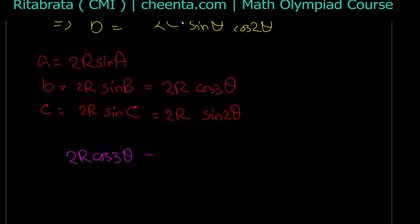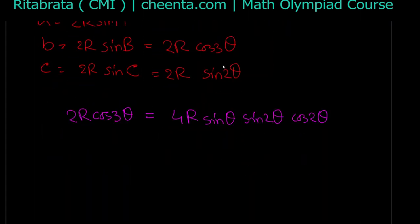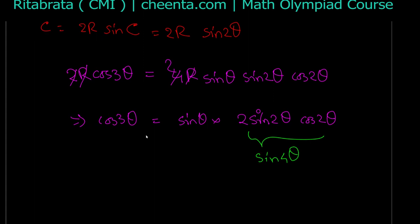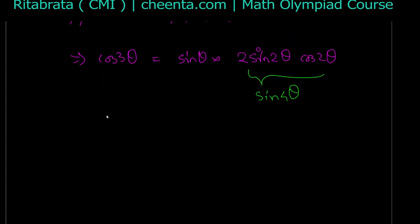Substituting gives 2R cos(3θ) = 4R sin(θ) sin(2θ) cos(2θ). We can cancel R and a factor of 2, giving cos(3θ) = sin(θ) · 2 sin(2θ) cos(2θ). Recognizing that 2 sin(2θ) cos(2θ) = sin(4θ), we get the simpler relation: cos(3θ) = sin(θ) sin(4θ).